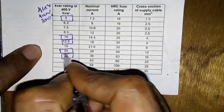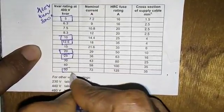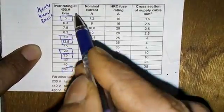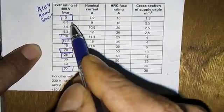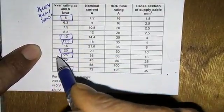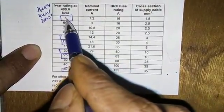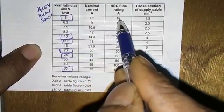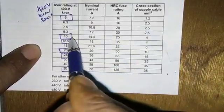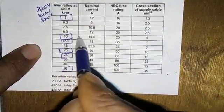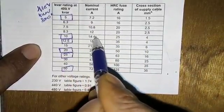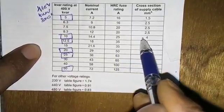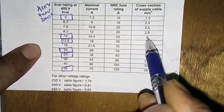So we mostly use the capacitor rating. 5kVAr: 16A, 155kVAr. 10kVAr: 14.4A. 25kVAr: 4A. 12.5kVAr: 18A. 35kVAr: 4A.